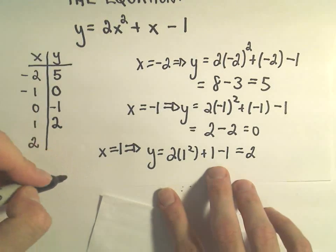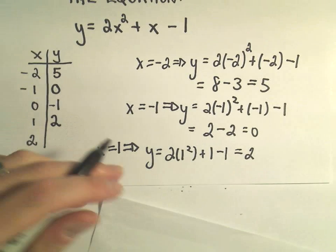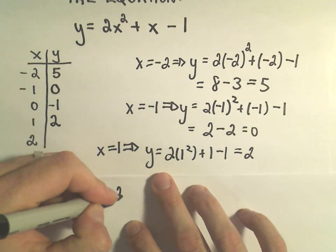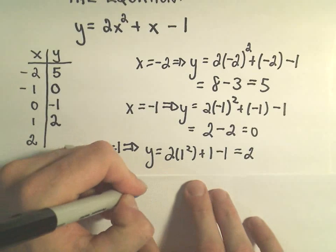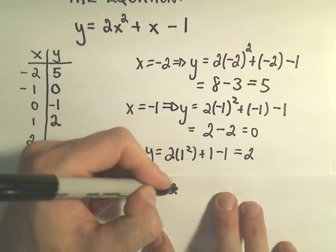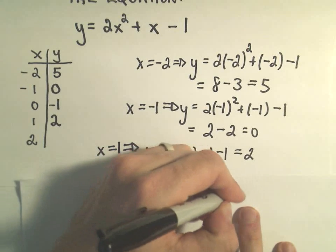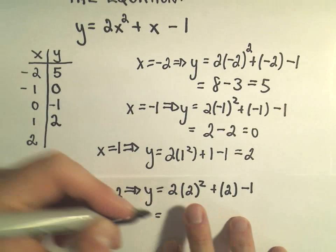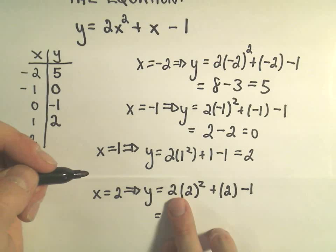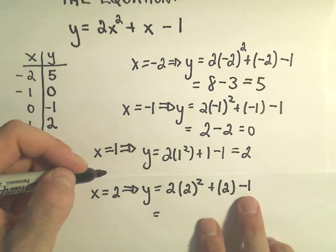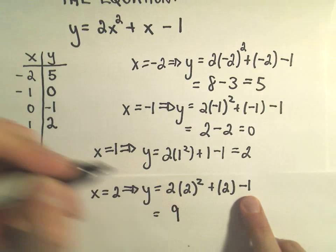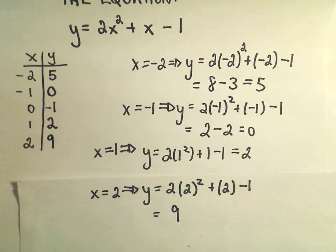Last but not least, if we plug in x equals 2, we'll get that y equals 2 times 2 squared plus 2 minus 1. Well, 2 squared is 4 times 2 is 8, 8 plus 2 is 10, and then 10 minus 1 is going to leave us with a 9.